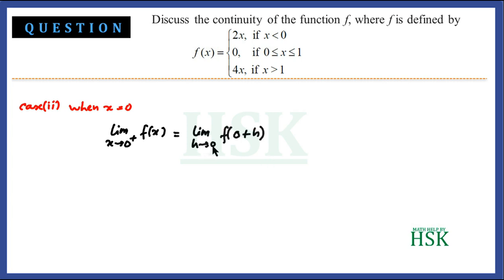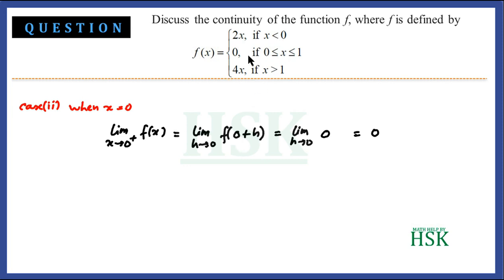The right-hand limit equals the limit as h tends to 0 of f(0 + h). Since 0 + h is a value greater than 0, it lies in the interval 0 ≤ x ≤ 1, so f(0 + h) = 0. Therefore the right-hand limit equals 0.